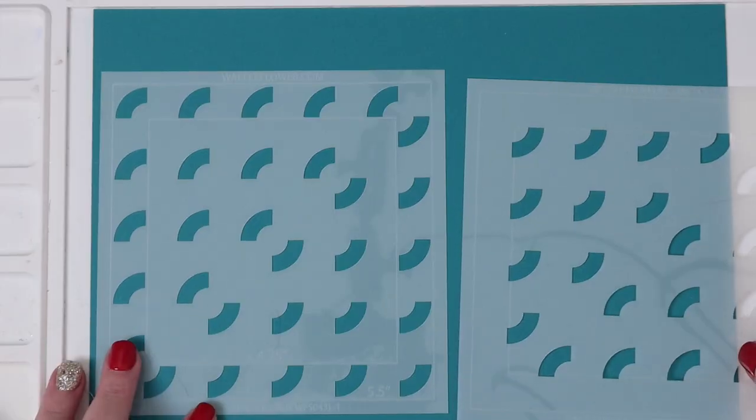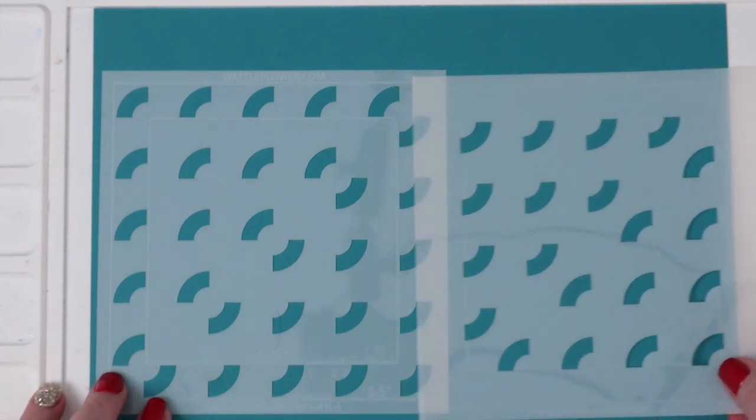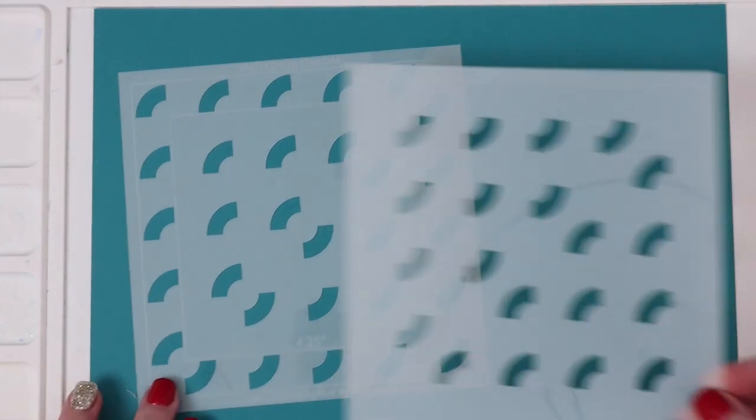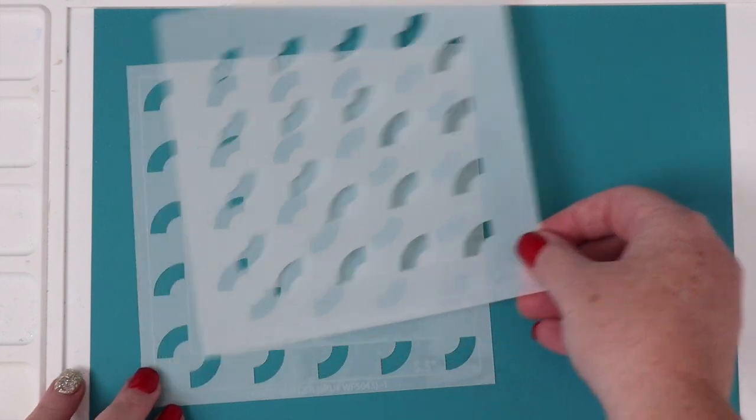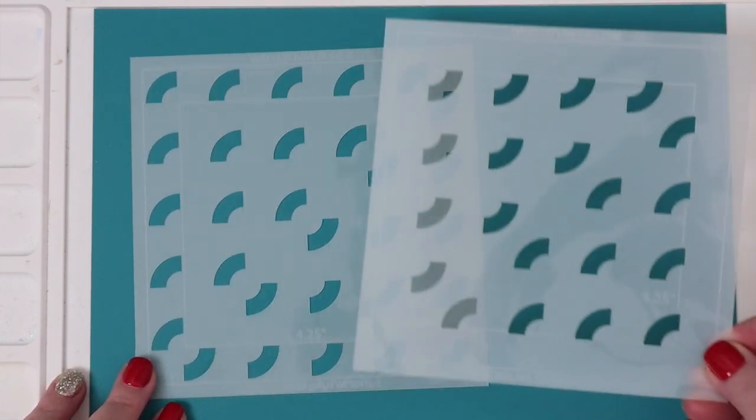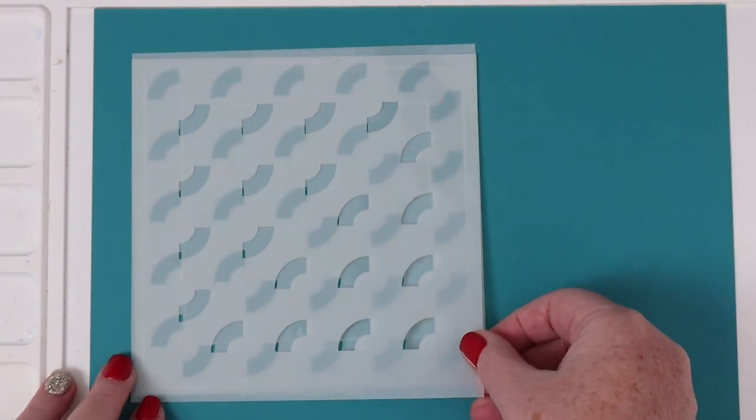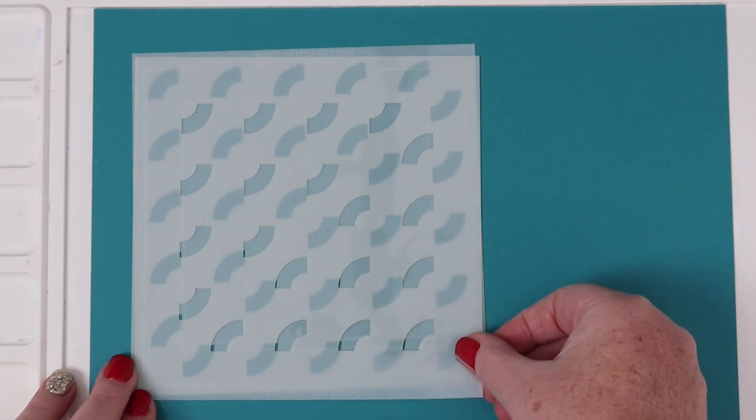The first technique uses different colors of distress oxide ink with layered stencils to create a really fun rainbow look. This is the Ring Builder stencils - number one is on the left and number two is on the right. You use them together and rotate them to create complete rings, and I'm going to show you exactly how to do that.